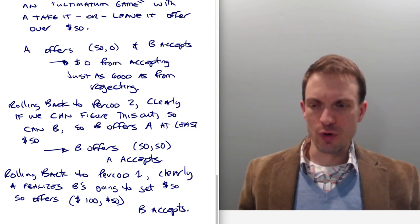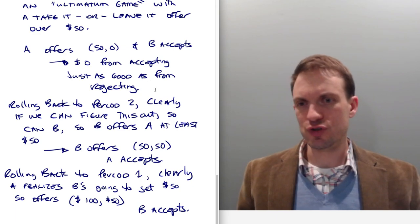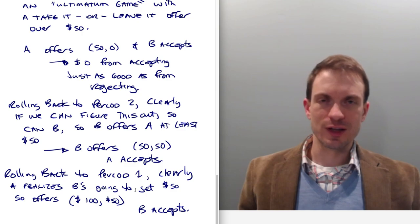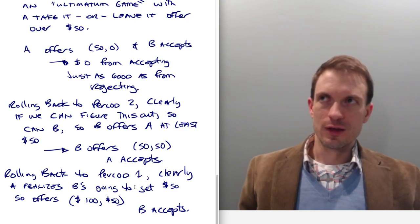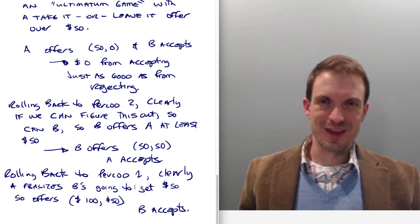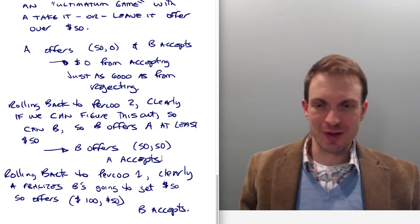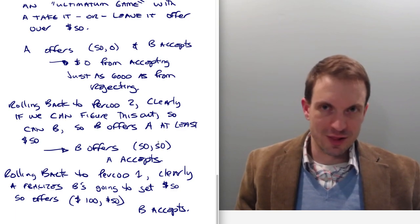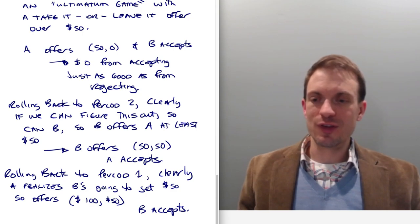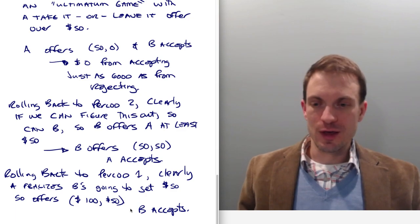Okay, suppose now let's just roll back to period one. A would accept because they're exactly indifferent, just like B should accept here. So rolling back to period one, clearly A realizes that B is going to get 50 either way, right? Because if A doesn't offer B 50 in the initial period, B is going to reject. And then B is going to give an offer that involves 50 for themselves in the second period. A is going to accept that because they're exactly indifferent between this 50 and the 50 they're going to get later. So might as well just give B the 50 from the get-go. And this is what happens. A is going to offer 100 to themselves and 50 to B, B is going to accept. And that is the equilibrium.